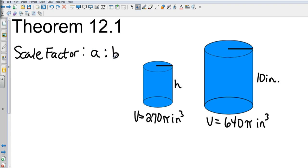Theorem 12.1 tells us that we can take the relationship of the surface area, and if the scale factor is a to b, then the surface area is a² to b².